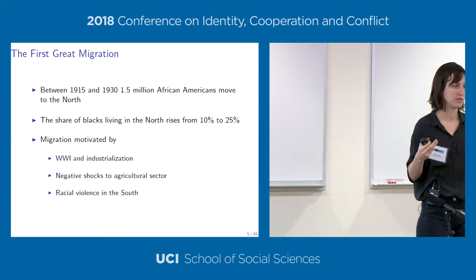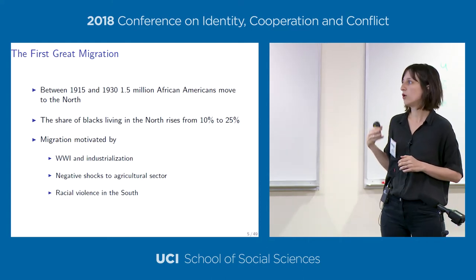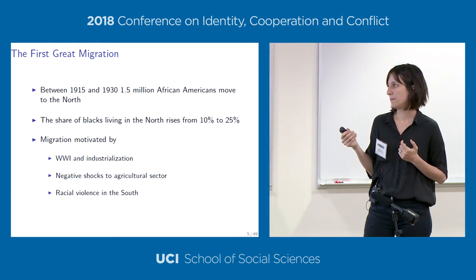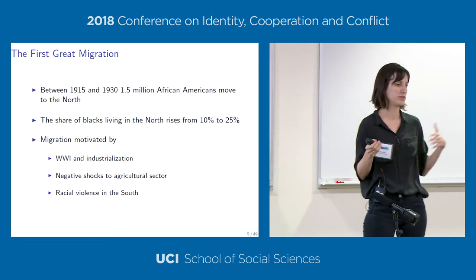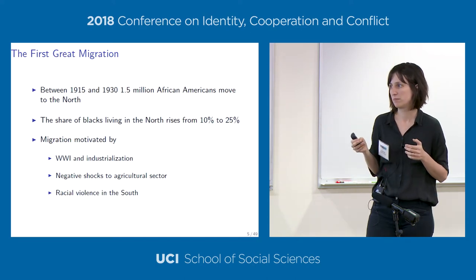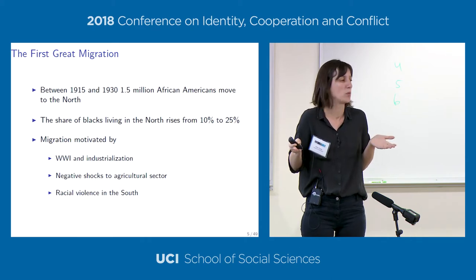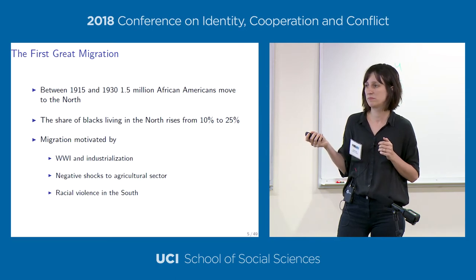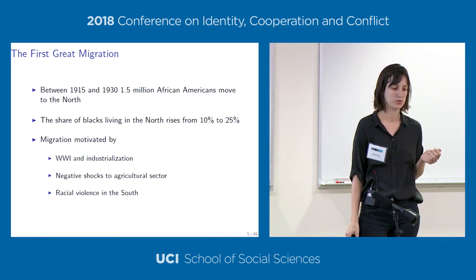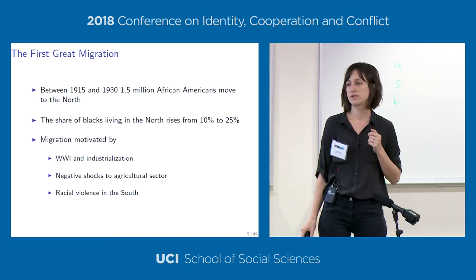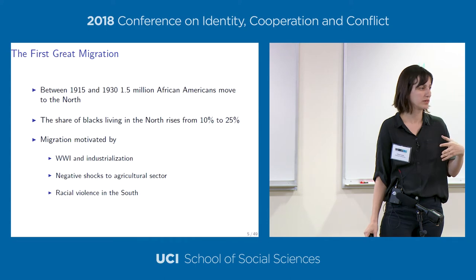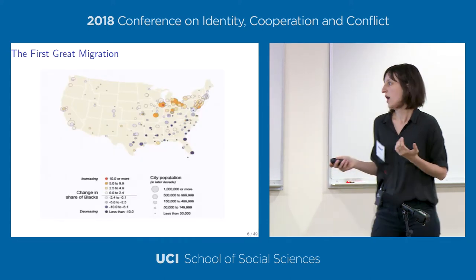The main pull factor in the North was the war and industrialization—new manufacturing jobs requiring low skill levels that could be filled by African Americans. Meanwhile, the South was not doing well. The late 19th century through the 1920s saw the political climate worsen dramatically for African Americans, with near-complete disenfranchisement, racial violence and lynching. The agricultural economy also suffered negative shocks, including the boll weevil infestation affecting cotton crops and a great Mississippi flood in the 1920s, driving African Americans—who were mostly employed in agriculture—to leave.